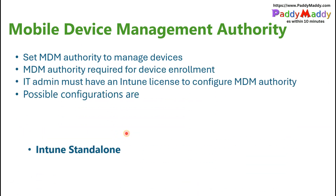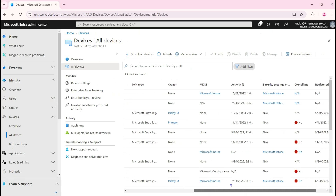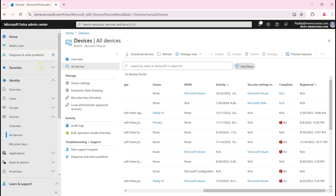Setting the authority to manage devices is the first mandatory configuration. If you do not have the MDM authority set, devices cannot be managed — whatever authority is available, devices will work based on that only. To correlate, if you go to the Entra admin center portal under Devices, you can see MDM is showing as 'None' for a couple of devices.